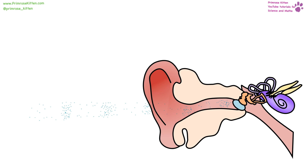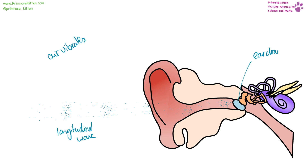A sound wave is a longitudinal wave. It vibrates the air particles, and your eardrum will pick up the vibration of the air particles and turn it into sounds which your brain can interpret. The range of human hearing is 20 hertz to 20 kilohertz.